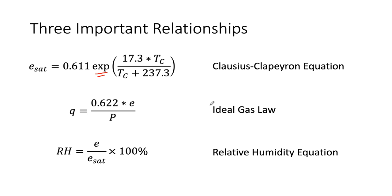The second important equation comes effectively from the ideal gas law. Without going through the derivation, it gives us the specific humidity as a function of e, the actual vapor pressure, and the air pressure. The constant 0.622 comes from the relative gas constants of water vapor and dry air. The third equation is the relative humidity equation: relative humidity equals the actual vapor pressure divided by the saturation vapor pressure, times 100%.